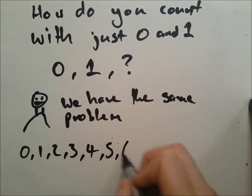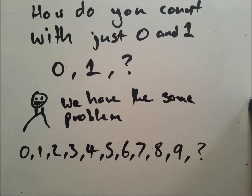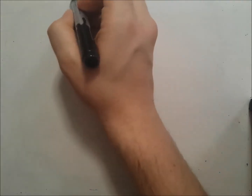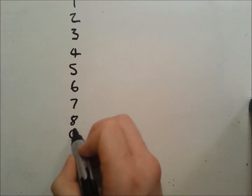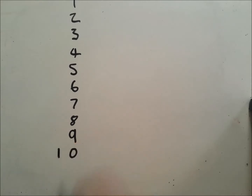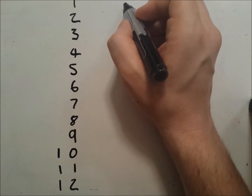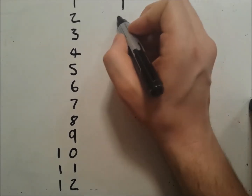We go 0, 1, 2, 3, 4, 5, 6, 7, 8, 9 — and then what? We have the same problem. We get stuck. We get around this when we get to nine by putting a little zero in. We shift the place. In binary we do exactly the same thing, just earlier.